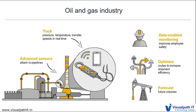We can use IoT technology in the oil and gas industry. For example, through a gas pipeline, if the pressure or temperature changes, the calibration will alert us to the problem. Simultaneously, all the data can be communicated in real time so that issues can be controlled before any disaster happens. We can also keep track of employee safety, optimize routes, and optimize forecast future volumes.